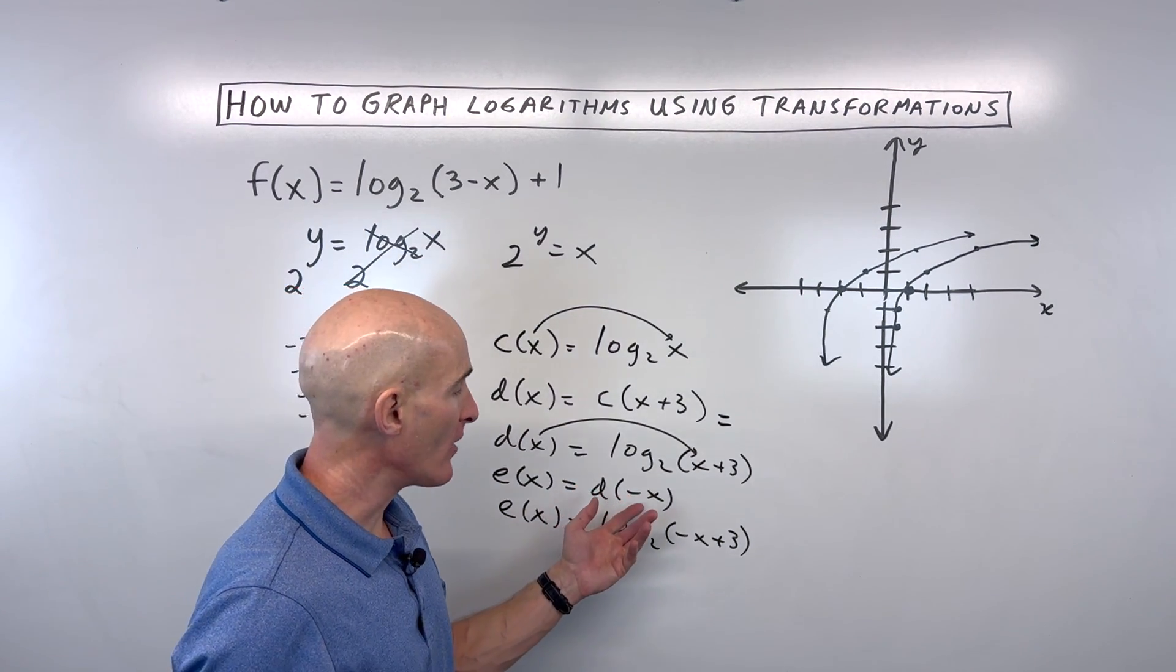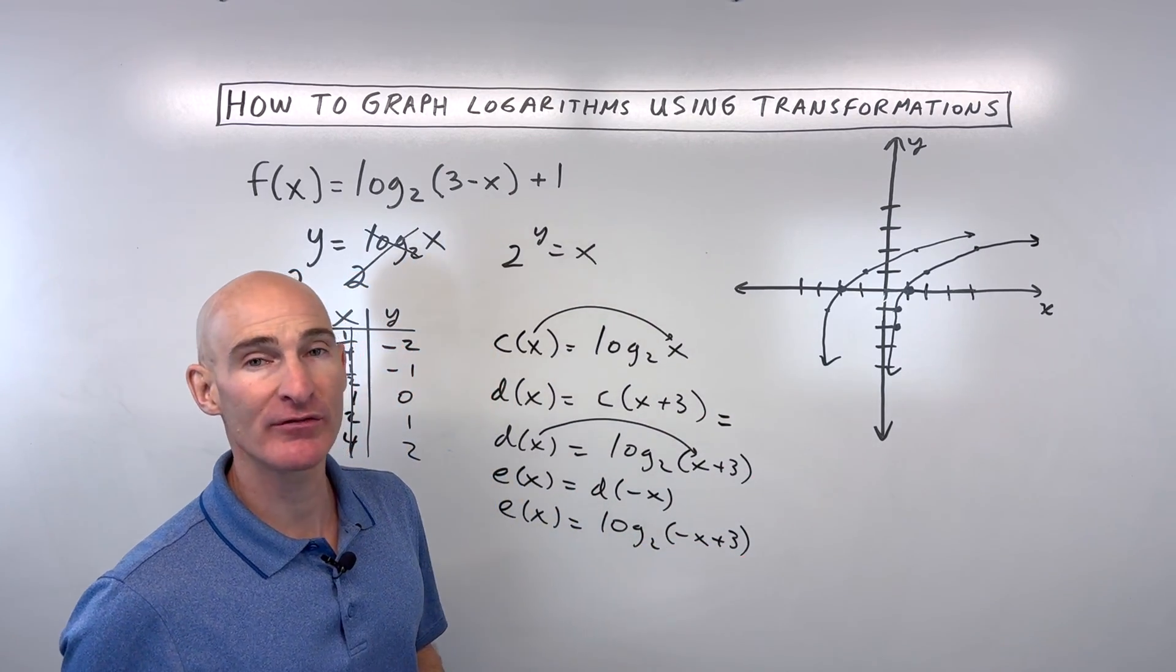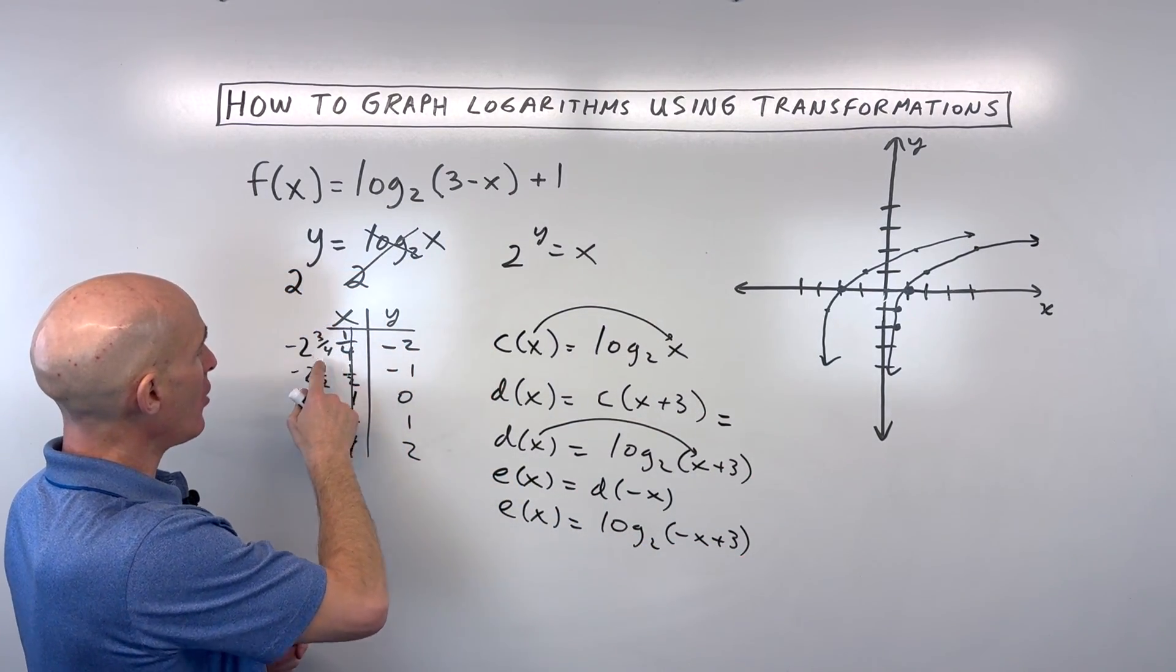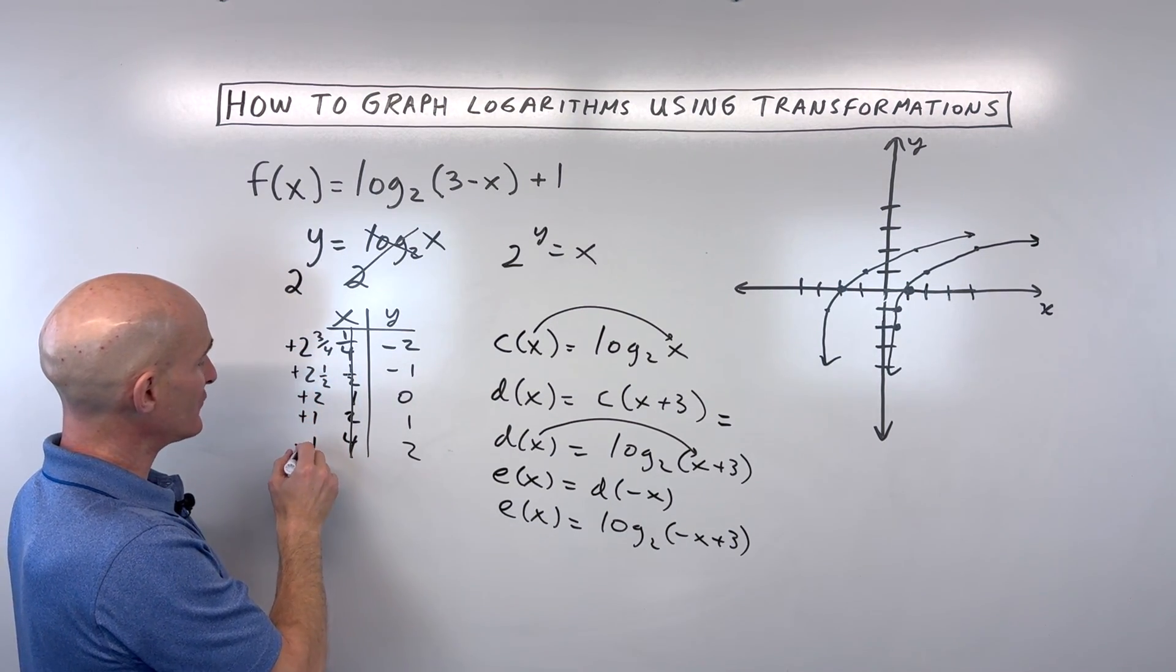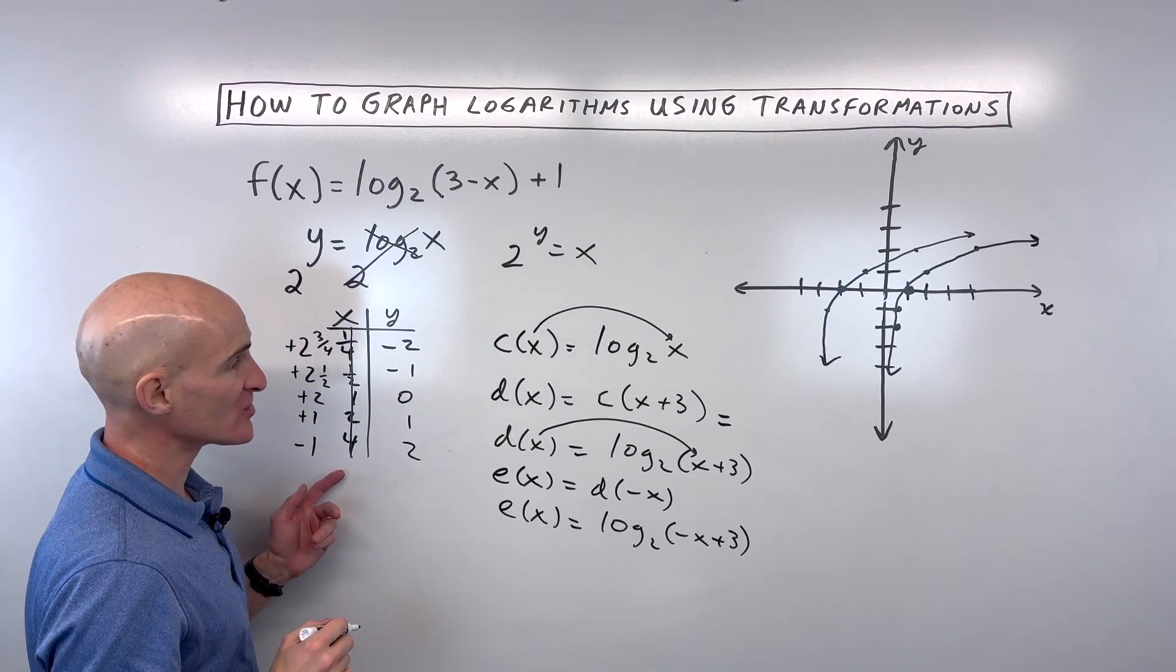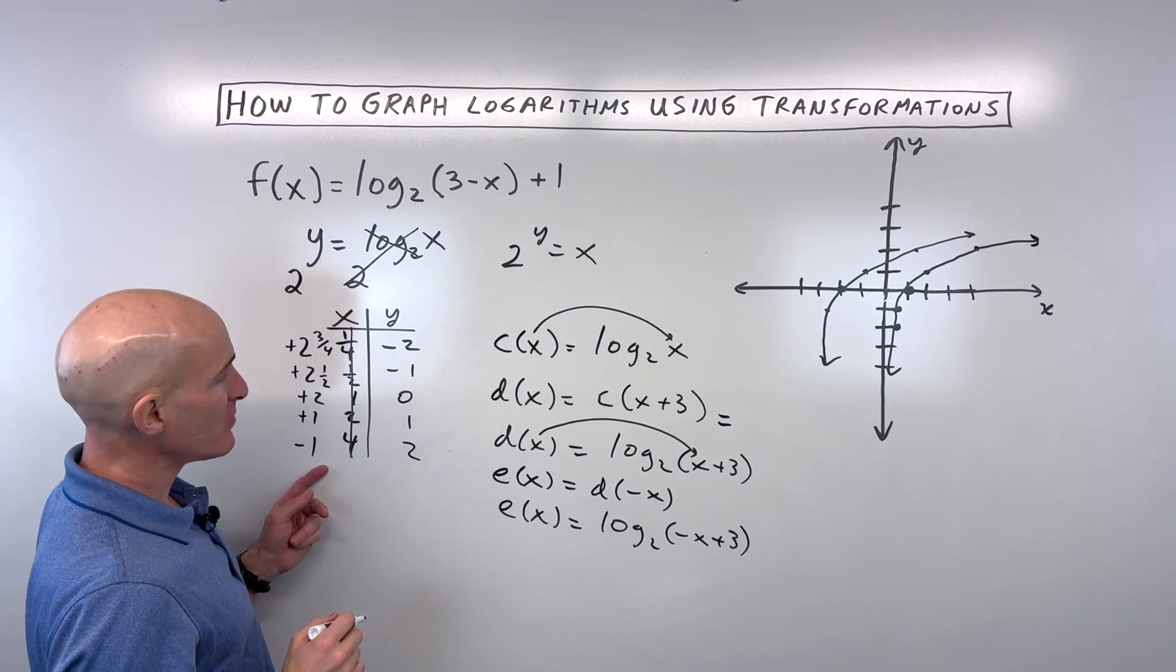This negative x, it's going to make all the x values the opposite, which is going to reflect it over the y-axis. So if we make all the x values the opposite, this is going to become positive, positive, positive, positive, negative. So I just change those signs on the x to the opposite. Let's plot these points now.